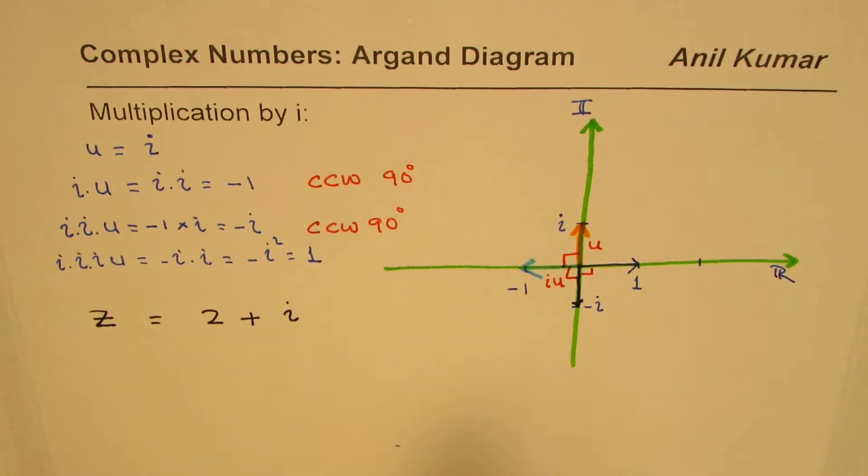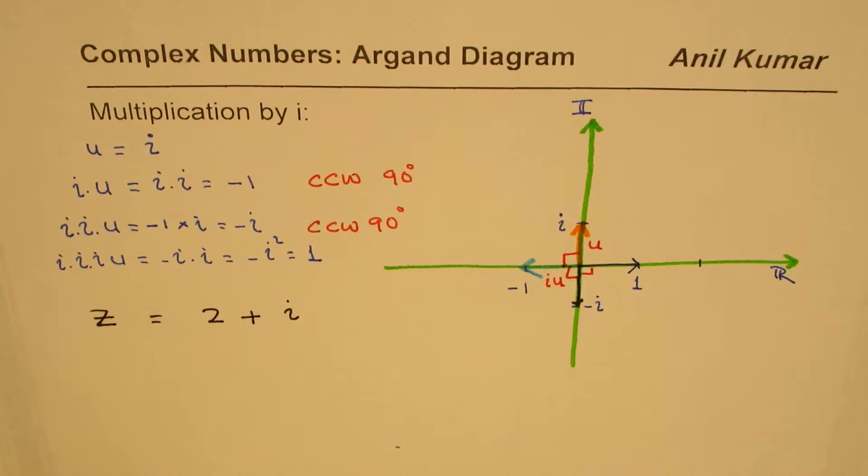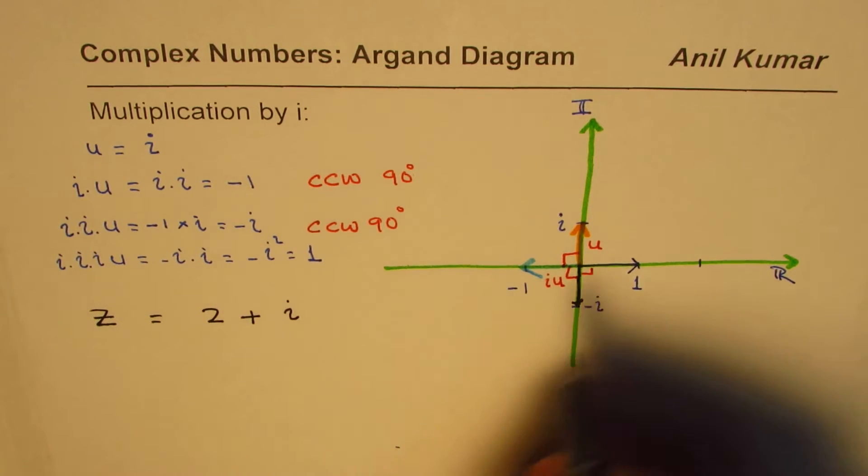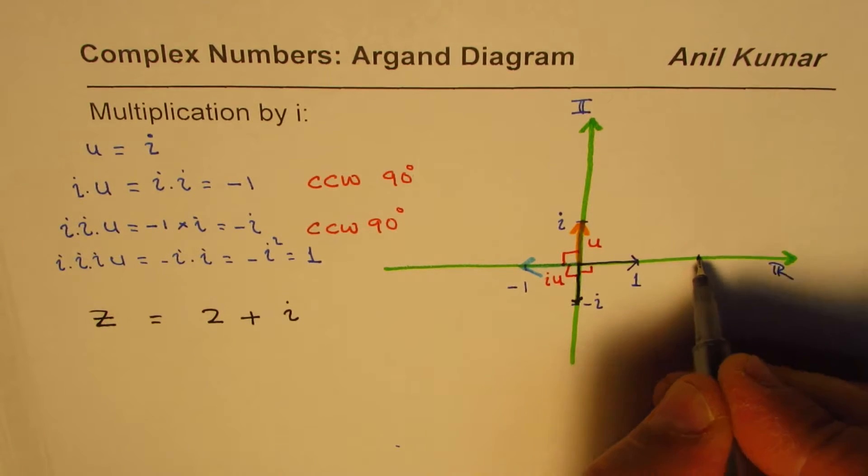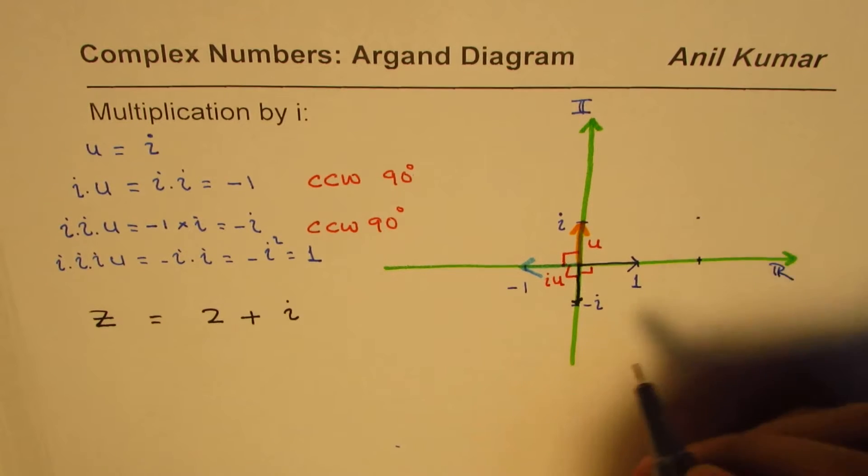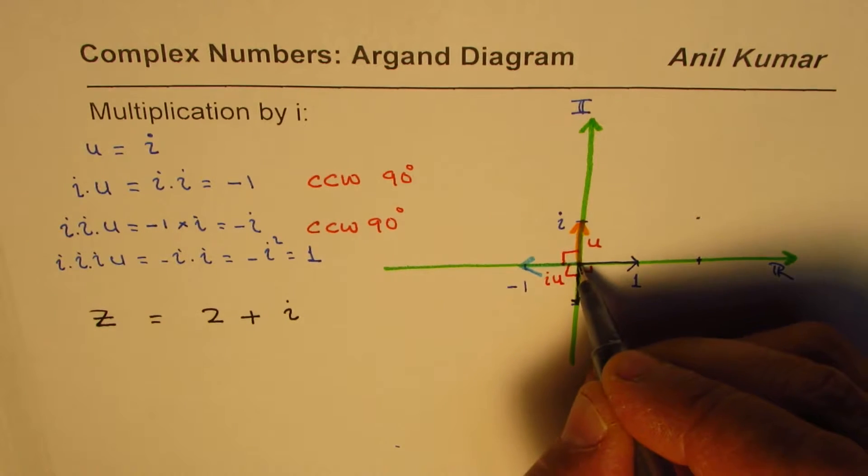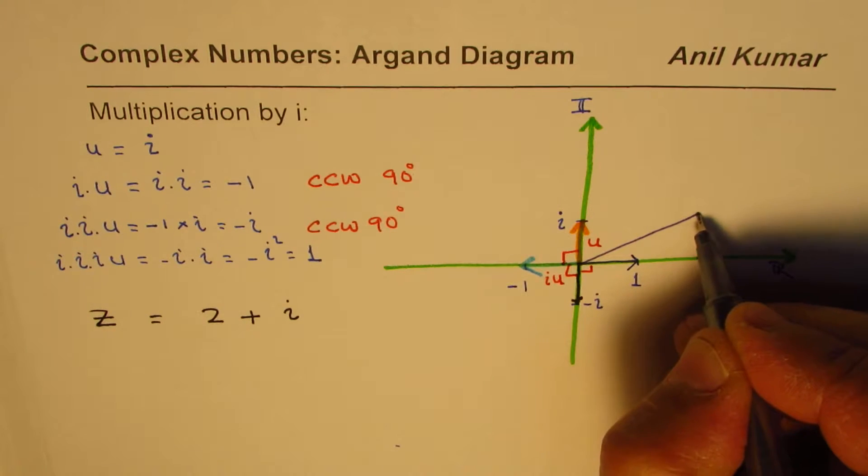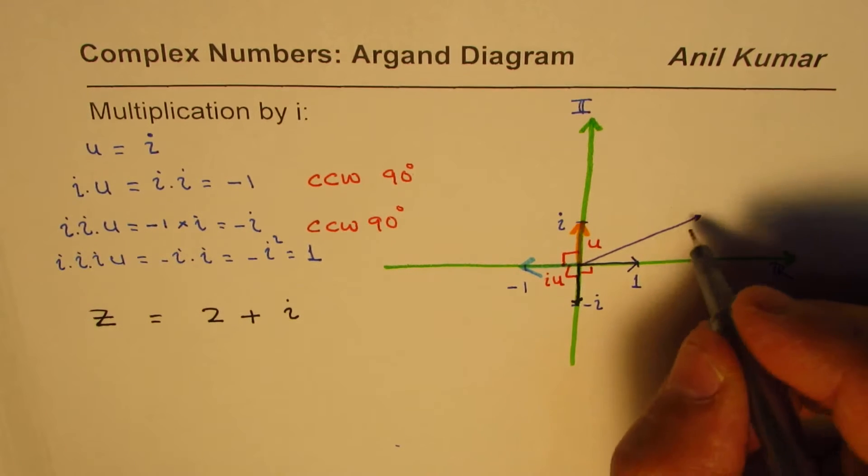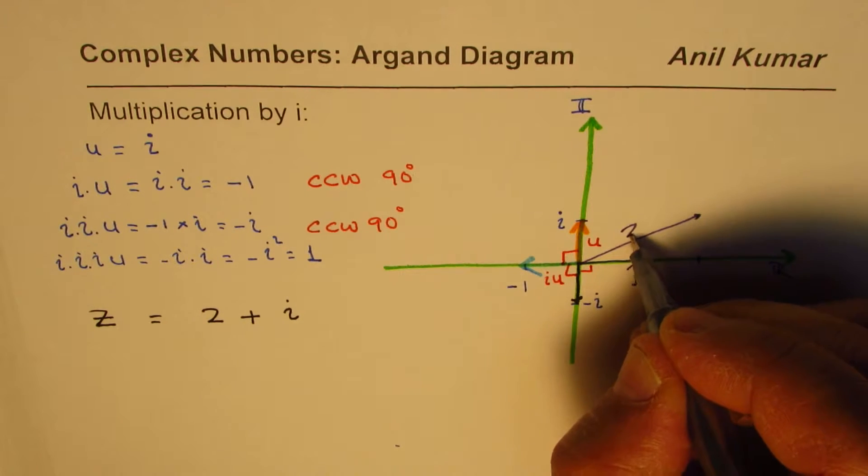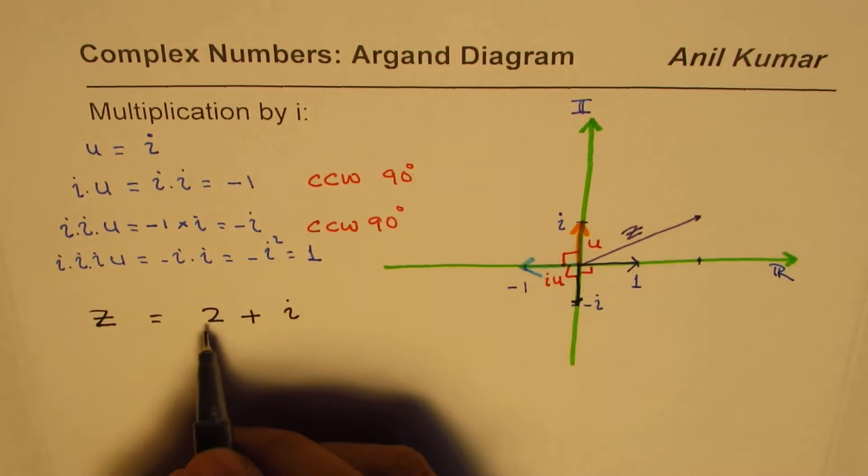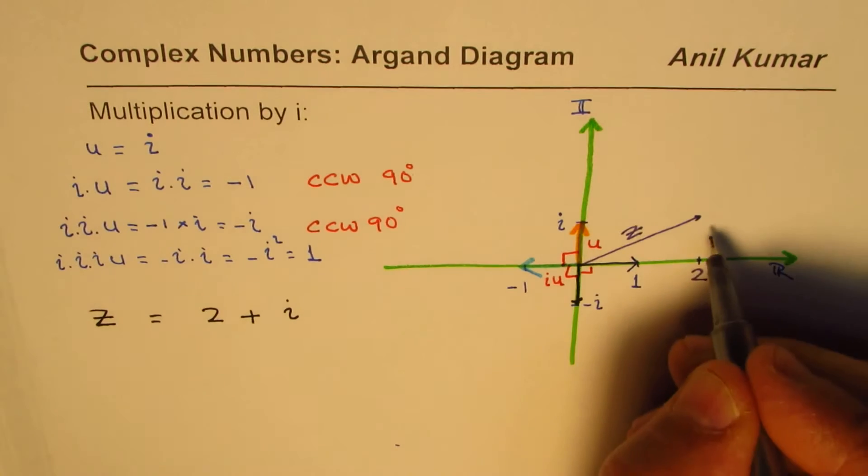Now 2 plus i could be represented on the Argand diagram with a diagram which has two real parts, that means from here to here and then one imaginary. So that becomes the rectangular coordinate. So this is what it is. So we can say this is my vector, this is my complex number z, which is 2 plus i. So this is 2 and that is i.